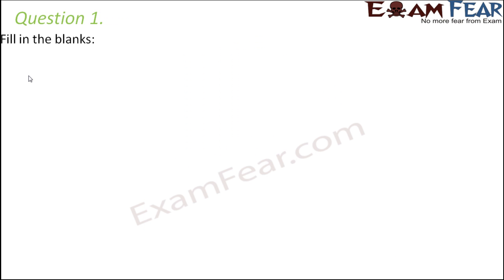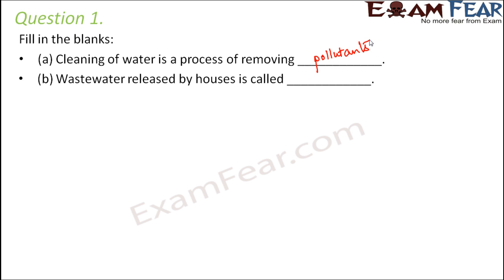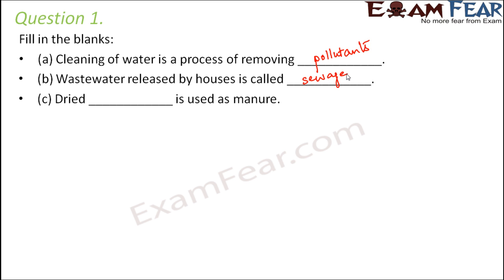Question one — fill in the blanks: Cleaning of water is a process of removing undesirable substances called pollutants. Wastewater released by houses from a community is called sewage. Dried sludge is used as manure — sludge is the solid waste produced during the sewage treatment process.